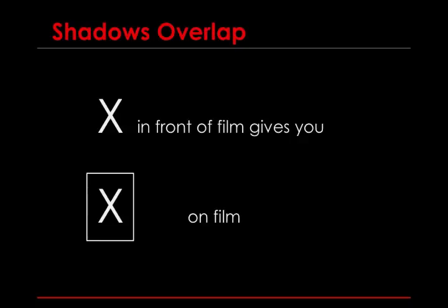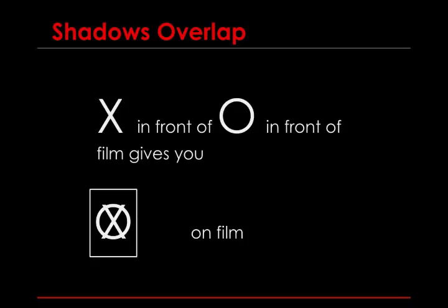Shadows overlap. So if you have an X in front of a film, it'll give you a white X on an otherwise black field — let's say the X was metal. But if you have an X in front of an O, which are both in front of the film, then the shadows will be overlapping. A single X-ray film doesn't tell you the relationship of where X is in regard to O; all you know is that in that one field of view, they lined up just right as the picture shows.